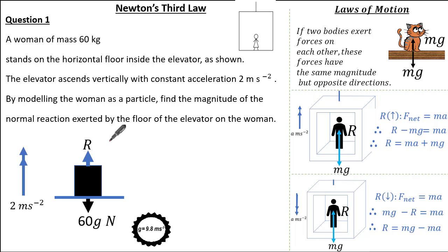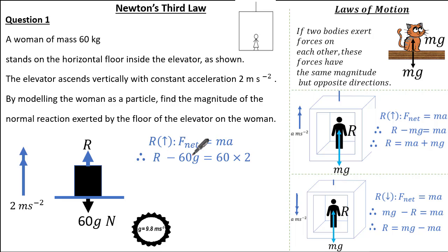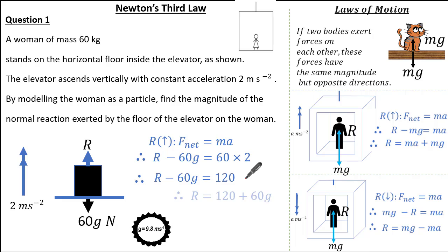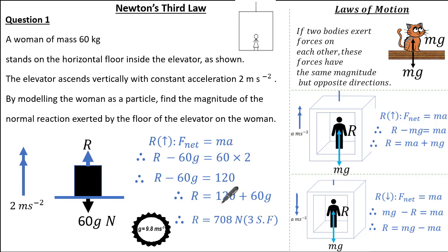Resolving forces using Newton's second law where net force equals mass times acceleration, and taking up as the positive direction: R minus 60g equals mass times acceleration, so R minus 60g equals 120. Rearranging with R as the subject gives R equals 120 plus 60g. Knowing g is 9.8 m/s², the normal reaction is 708 Newtons to 3 significant figures.